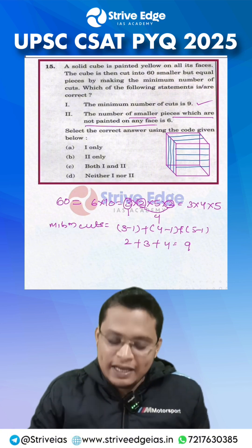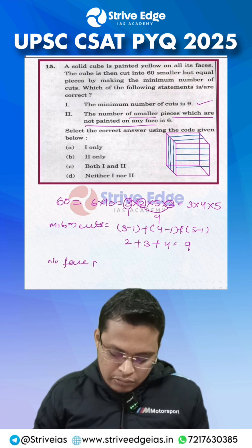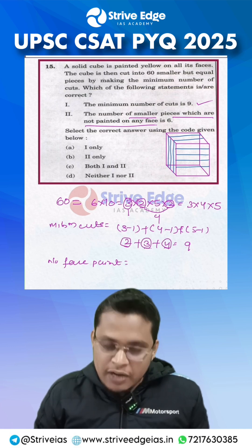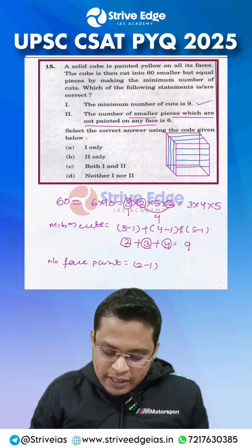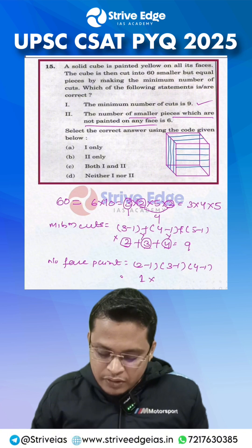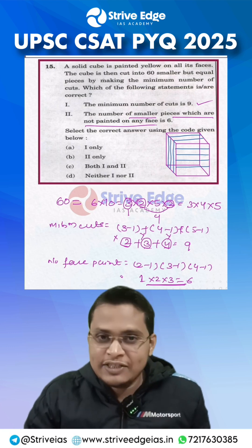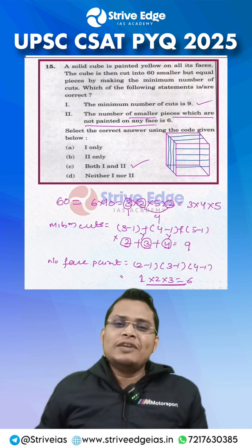Now for the number of small pieces with no face painted: the formula is to subtract 1 from the number of cuts made along each axis and multiply them together. Along the x-axis it is (2 minus 1), along the y-axis it is (3 minus 1), and along the z-axis it is (4 minus 1). That gives 1 into 2 into 3, which equals 6. So there are 6 pieces without any color, and the second statement is also correct.